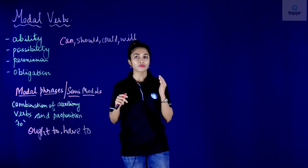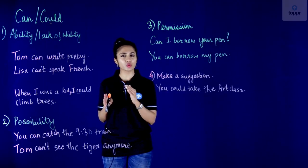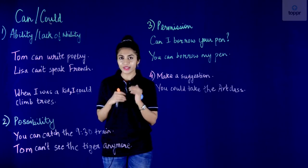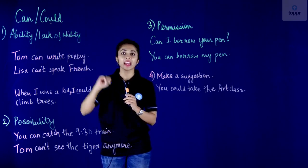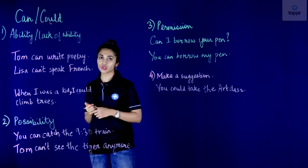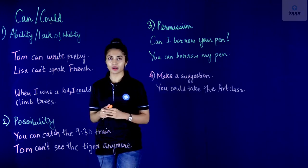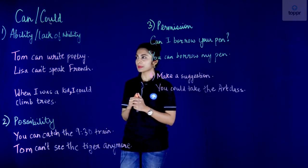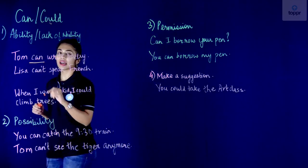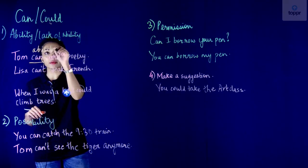Let's move on to our first pair: can and could. Have you ever thought about when one can use 'can' and when one should use 'could'? In today's class we are going to look at the modals can and could and understand when to use them. The first use is to show ability or lack of ability. The first example sentence: 'Tom can write poetry' — here 'can' is used to express ability, Tom's ability to write poetry.